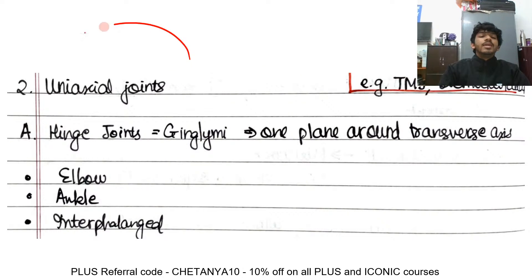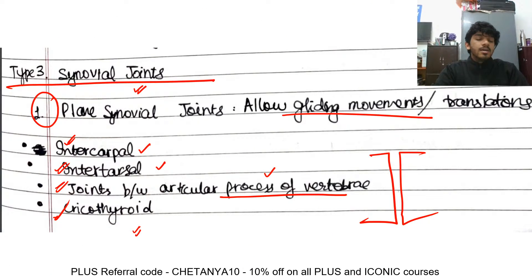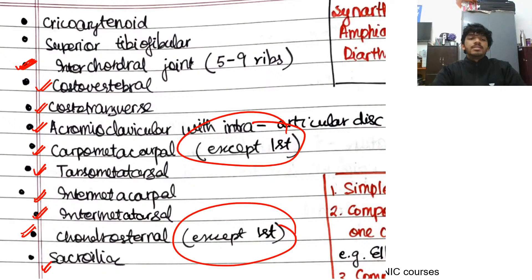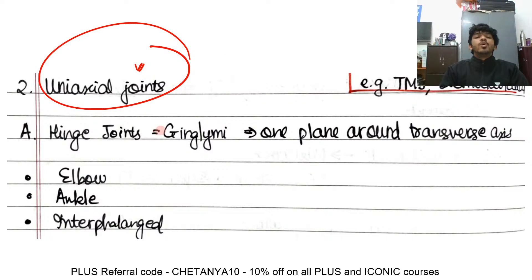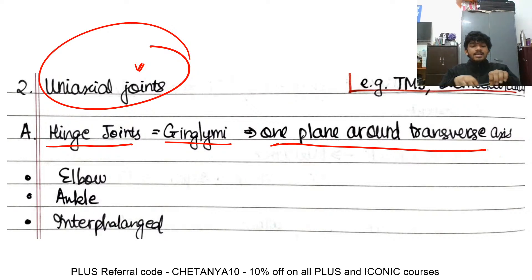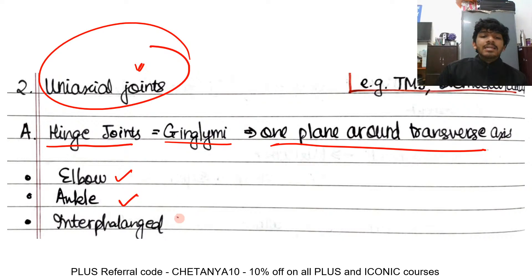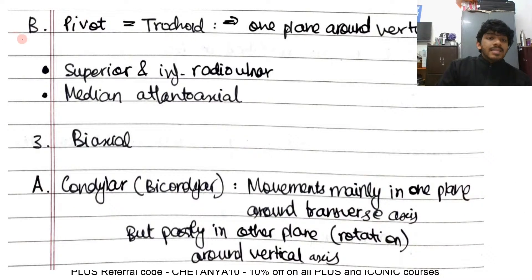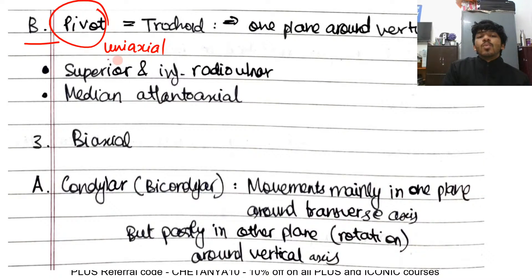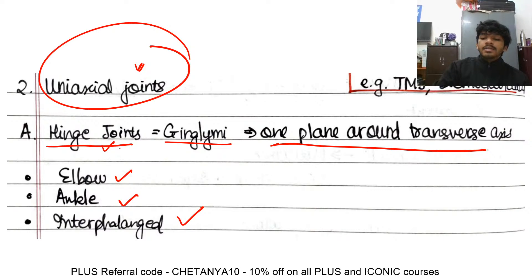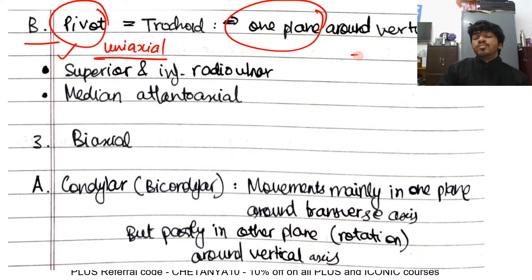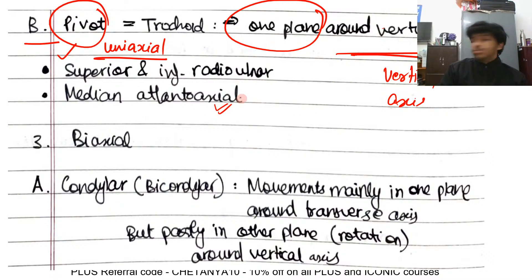Synovial joints are also classified by axes of movement. Plane synovial joints allow only gliding. Uniaxial joints include hinge joints (also called ginglymus), which move in one plane around a transverse axis — examples are the elbow, ankle, and interphalangeal joints. Pivot joints (also called trochoid) are also uniaxial and move around a vertical axis — examples are the median atlanto-axial joint and the superior and inferior radioulnar joints for pronation and supination.